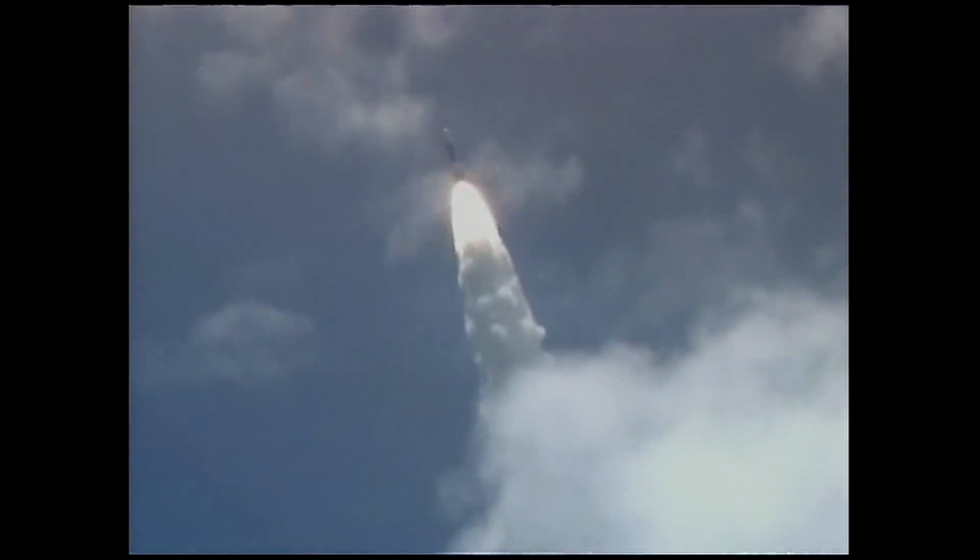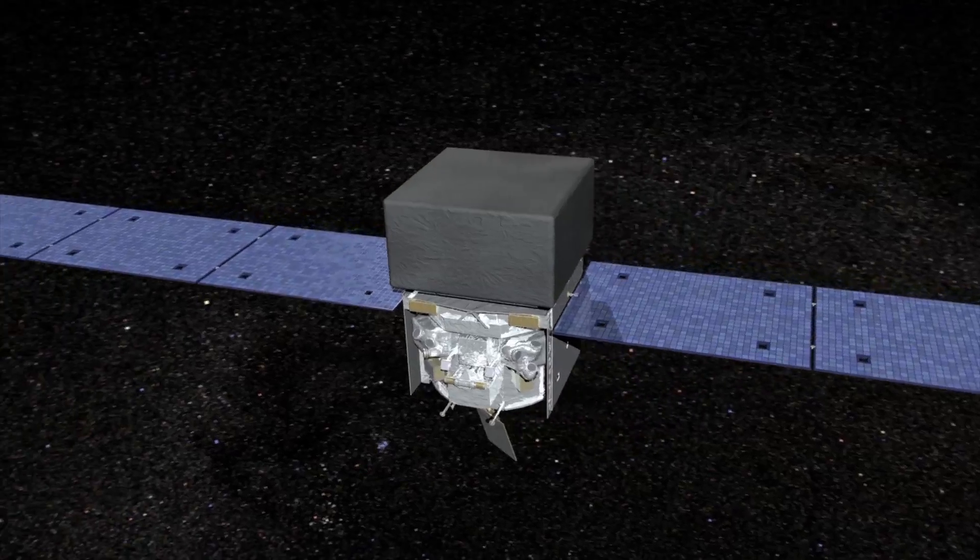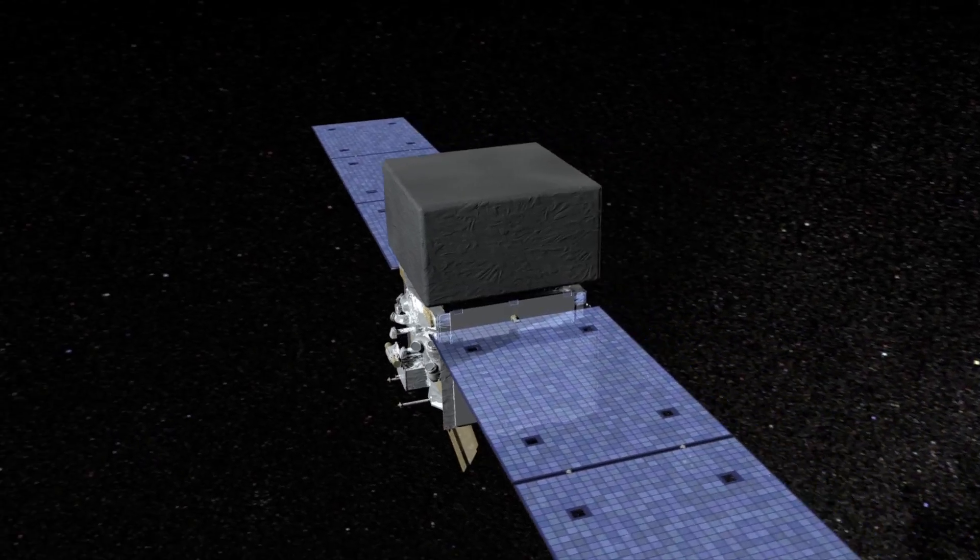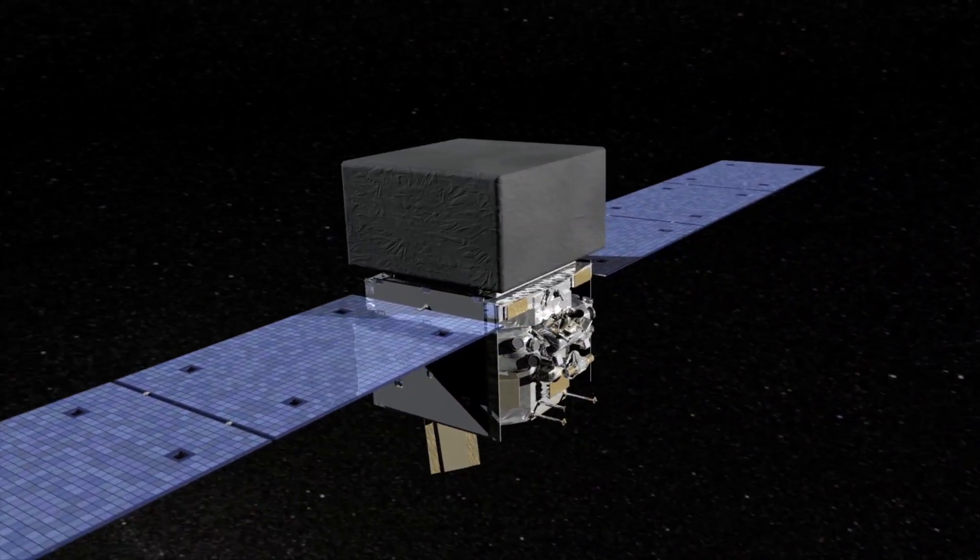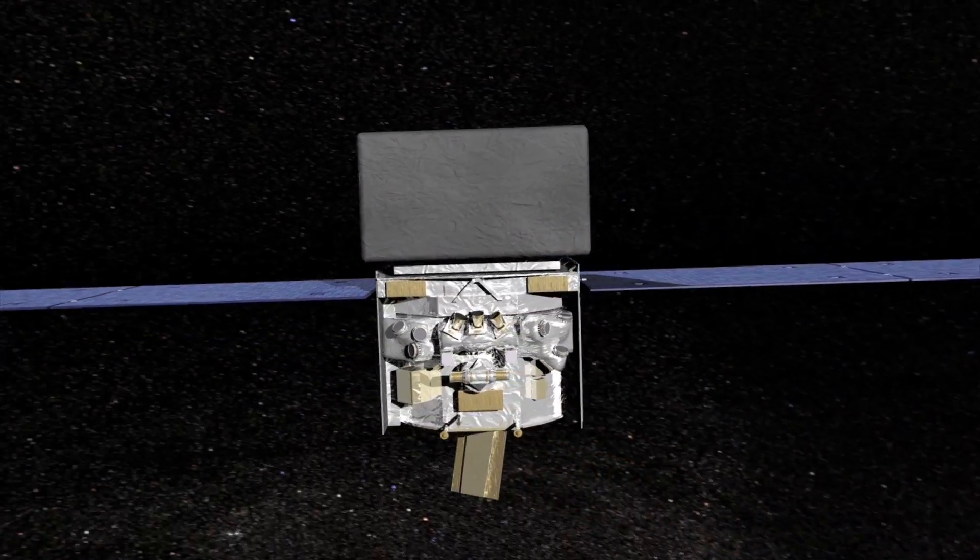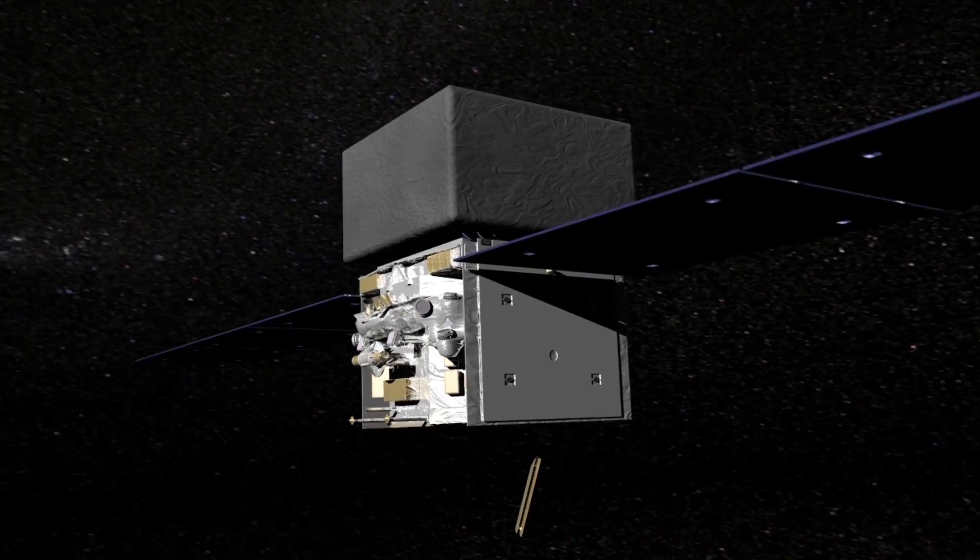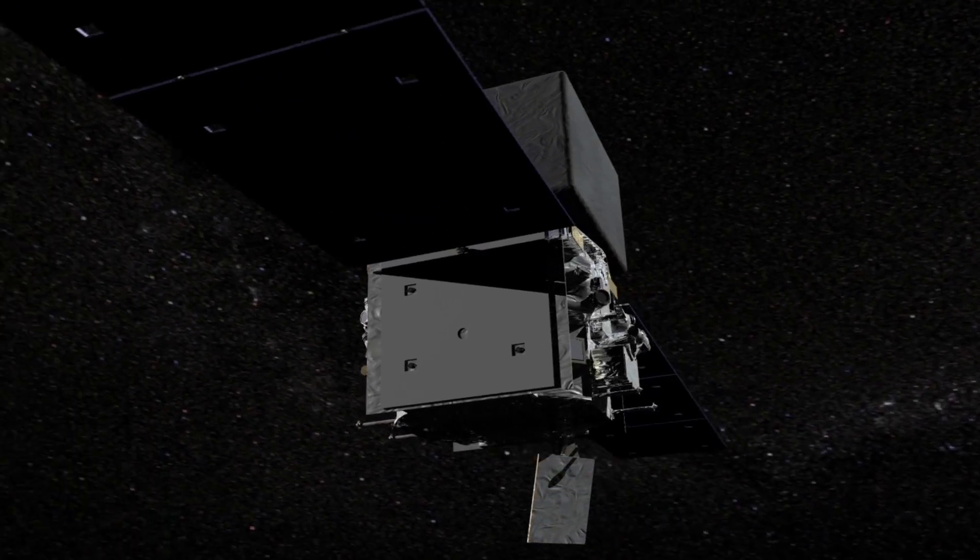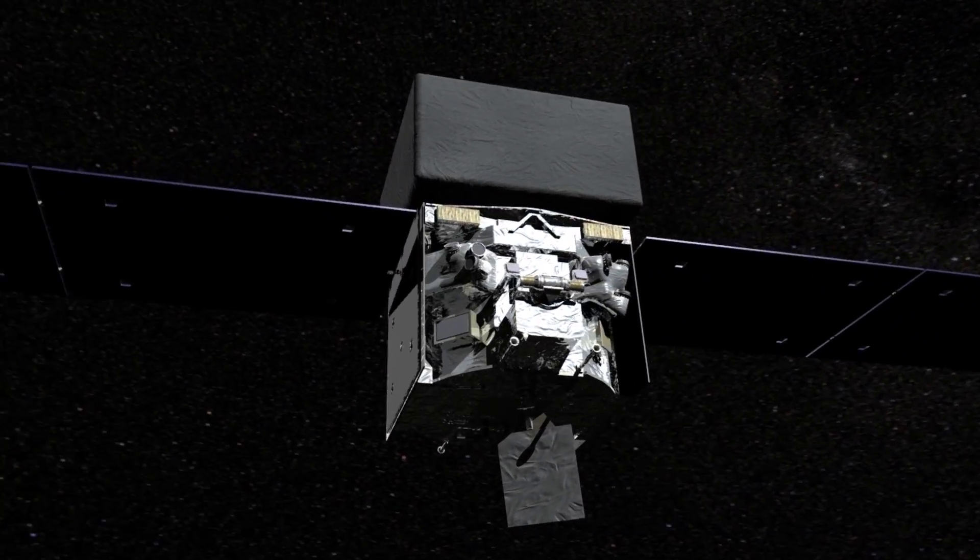Launched on June 11, 2008, GLAST, renamed the Fermi Gamma-ray Space Telescope, has been collecting gamma-ray data for five years. In that time, it has made some astounding observations of some of the most powerful events and objects in the universe, including some right on our doorstep.